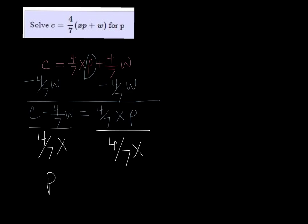So now I get that p is equal to c minus 4/7 w all over 4/7 x.